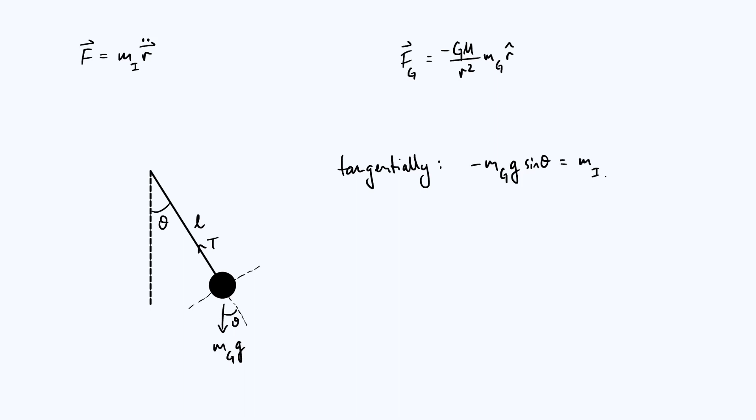We set that equal to the acceleration multiplied by the inertial mass. So we've got mi, inertial mass. The linear acceleration, because it's moving in a circle, is the radius of the circular motion L, multiplied by the angular acceleration theta double dot. So we've got our equation of motion which we can then rearrange.